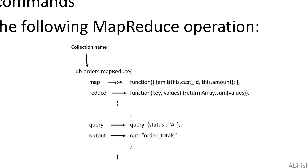The actual syntax of the MapReduce function is: db.collectionName.mapReduce(). Inside it, we have the Map function in the first curly bracket, which emits certain values. The Reduce function is in the second curly bracket, which returns certain values. The query part is an optional third curly bracket. Finally, the output specifies the file name — such as 'order_totals' — in which we store the data. This is the complete syntax of the MapReduce function.